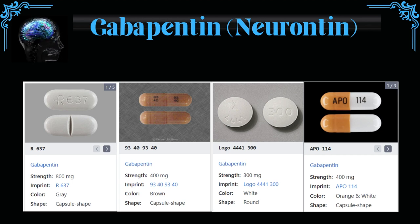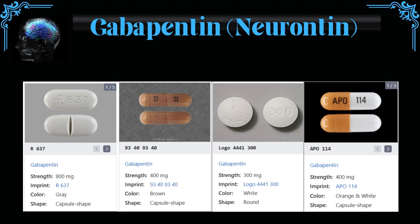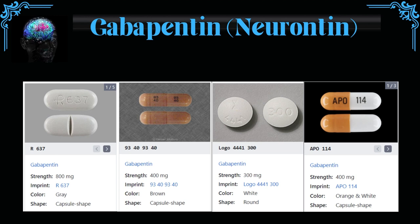Additionally, gabapentin may cause serious side effects, including vision changes, changes in mood and behavior, and suicidal thoughts and behavior. A black box warning is also present for gabapentin, indicating that it may cause suicidal thoughts and behavior, especially in children, adolescents, and young adults.